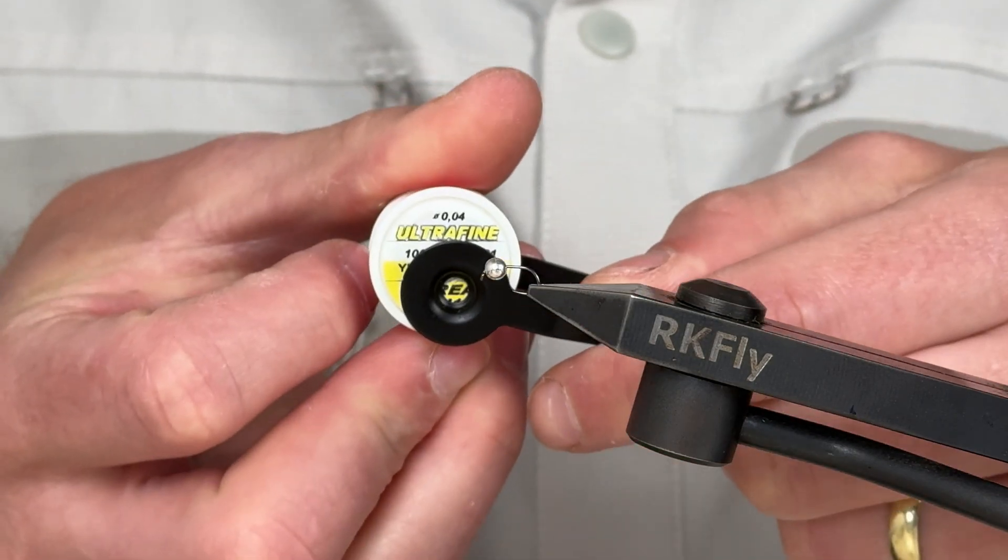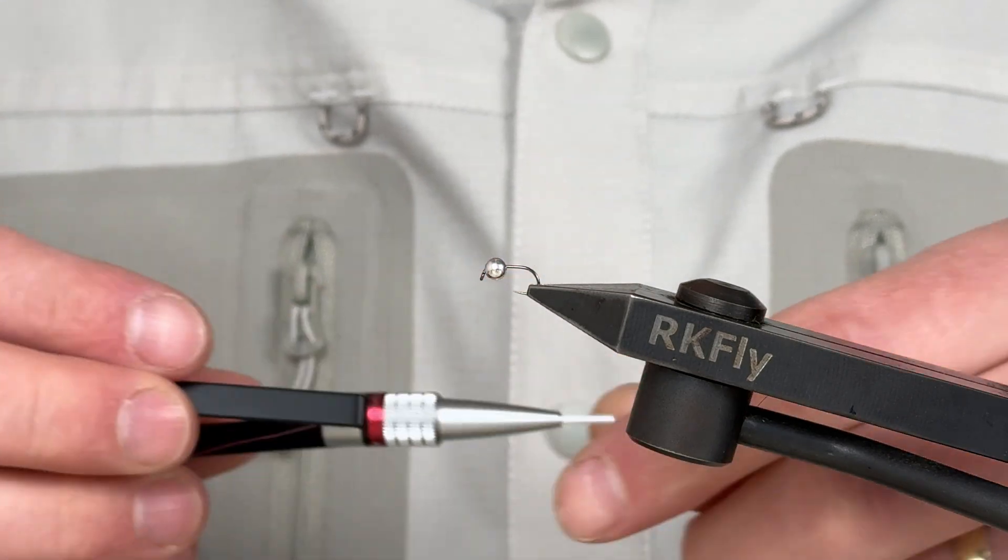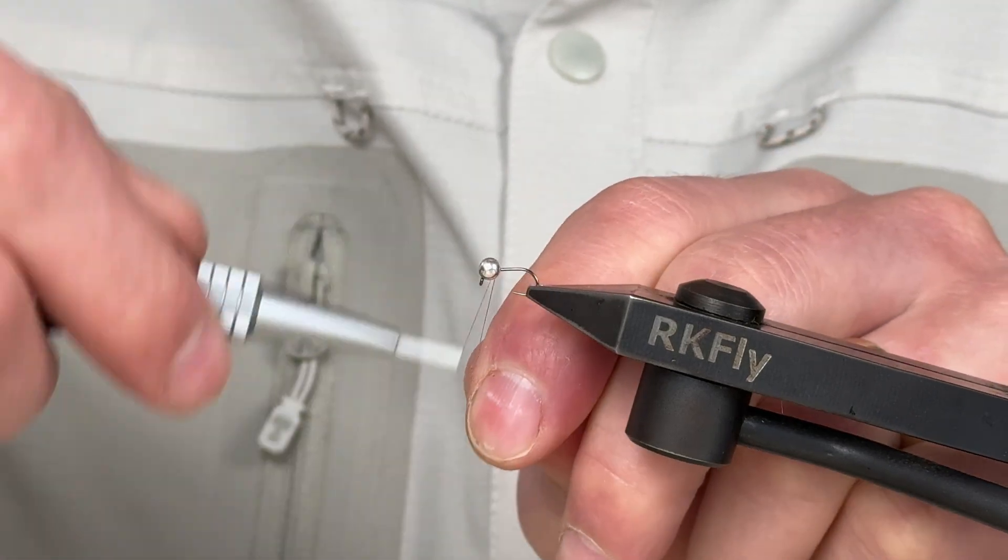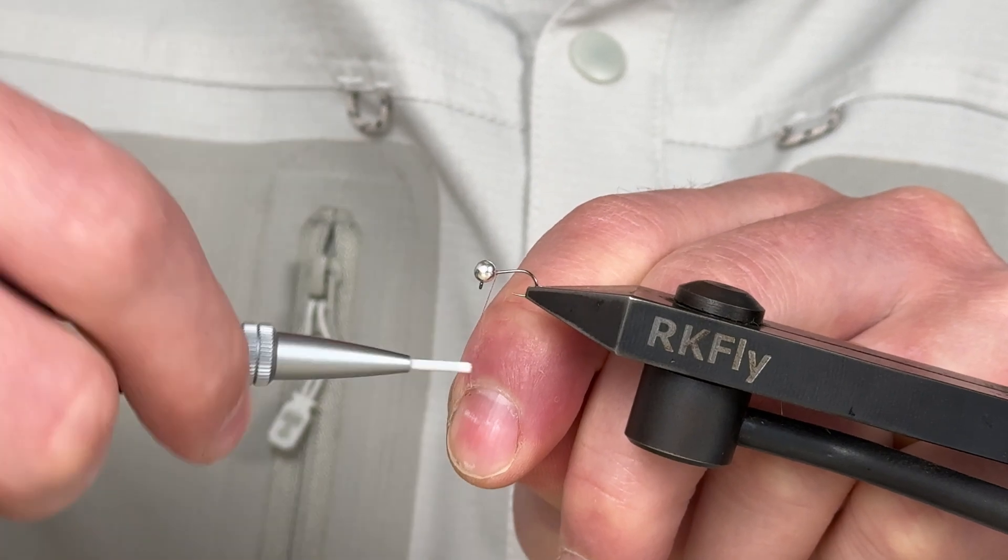The whole fly will be tied with Hens Ultifine thread in pink color. First, we will fix the position of the tungsten ball on the hook's shoulder.